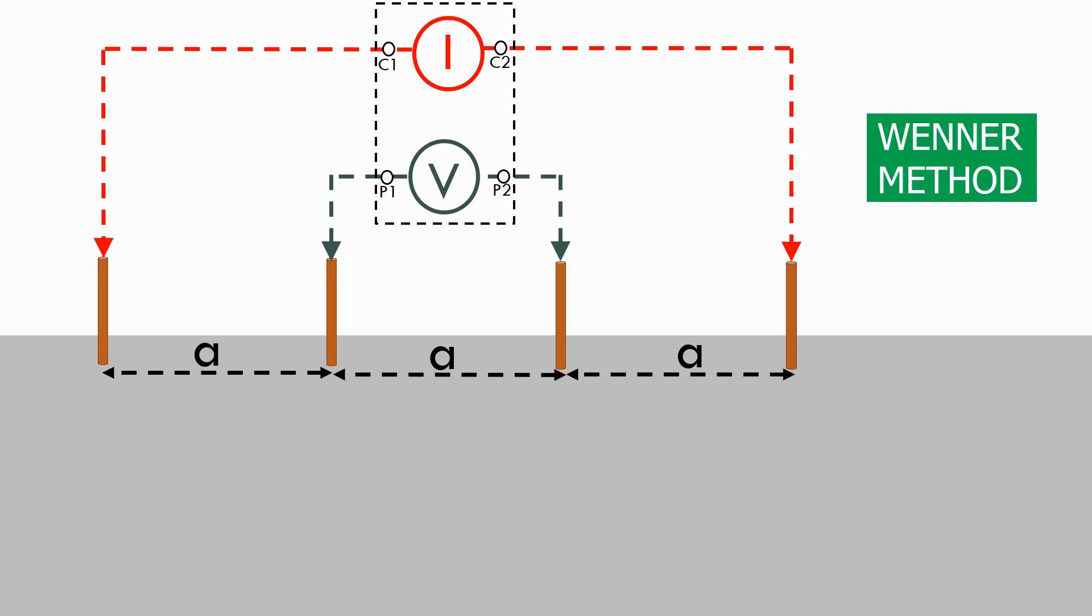The spacing of the rods A defines the depth at which the reading is being taken, as the current between the two outer rods flows through the ground in a parabolic fashion. So by varying the spacing of A we can change the depth at which we're measuring the soil resistivity, which can be very useful information when we're designing our grounding system.